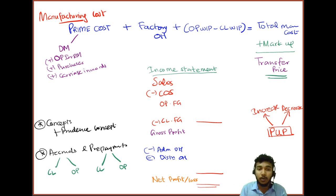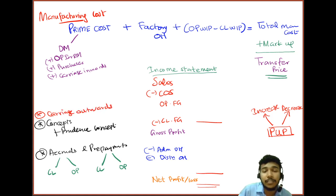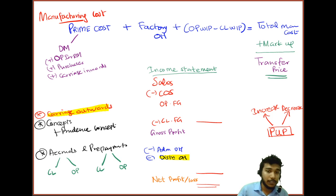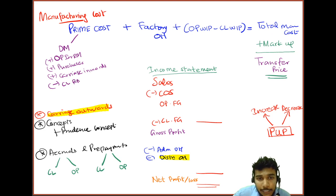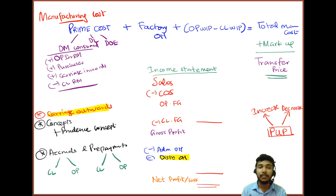Carriage outwards is the cost incurred when you deliver finished goods to your customers, and it will always be treated as a distribution cost — not taken to manufacturing cost. After adding all these costs, deduct closing raw materials to get direct materials consumed. Then add direct labor and direct other expenses such as royalties.